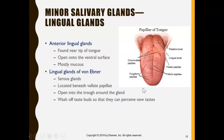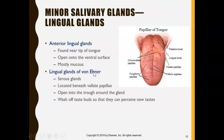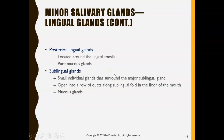We also have glands on our tongue. Our tongue stays moist because of lingual glands. There are anterior lingual glands in the front, and lingual glands of von Ebner, which are located around the vallate papillae. Many different glands on the tongue keep it moist.